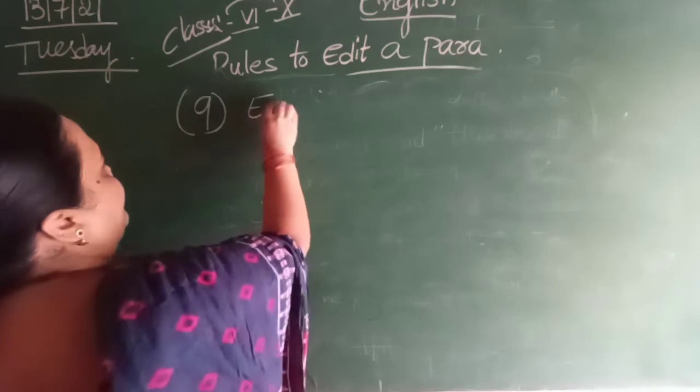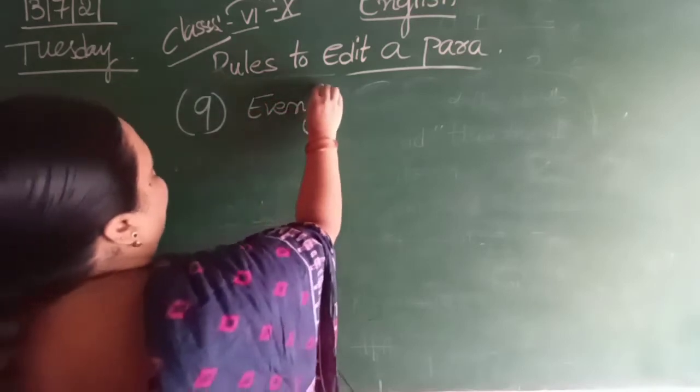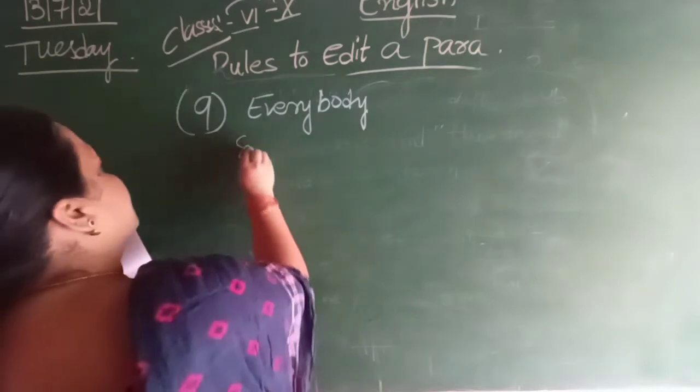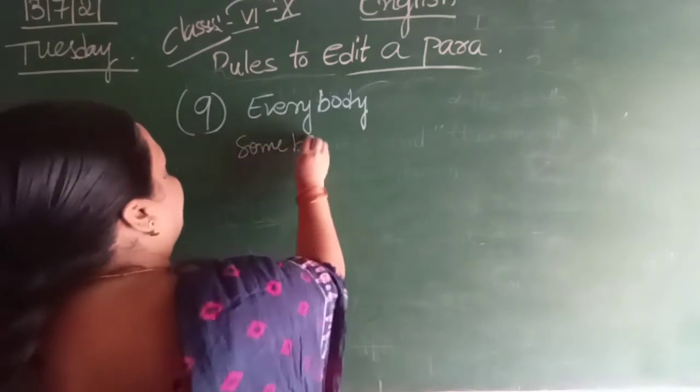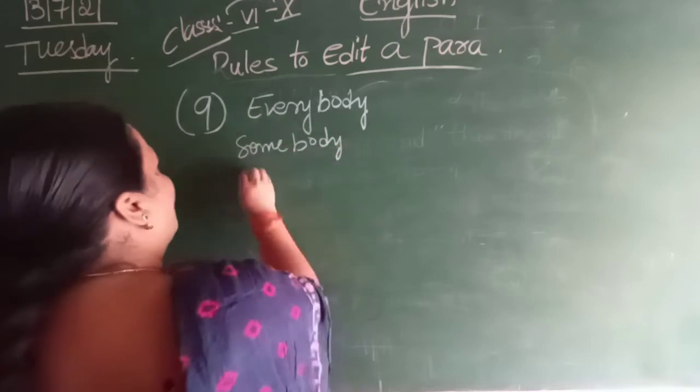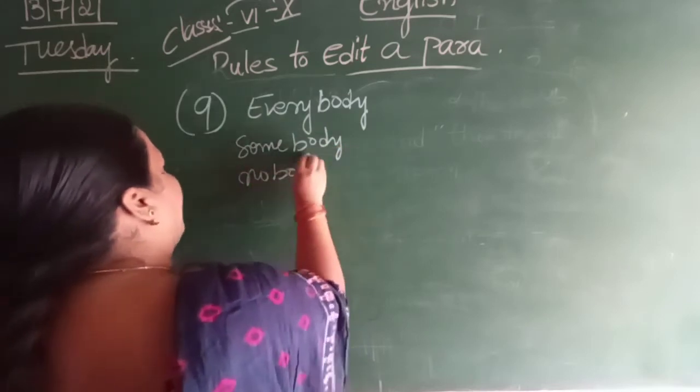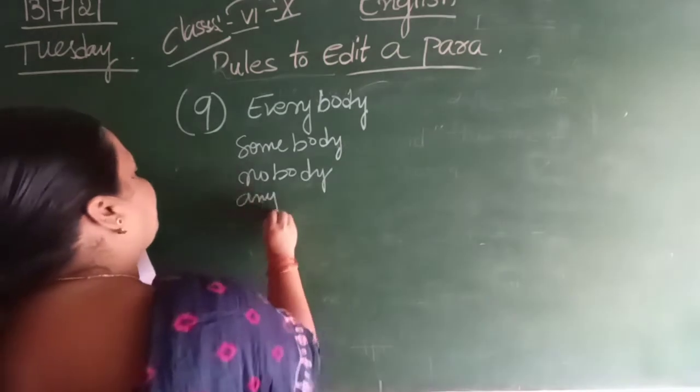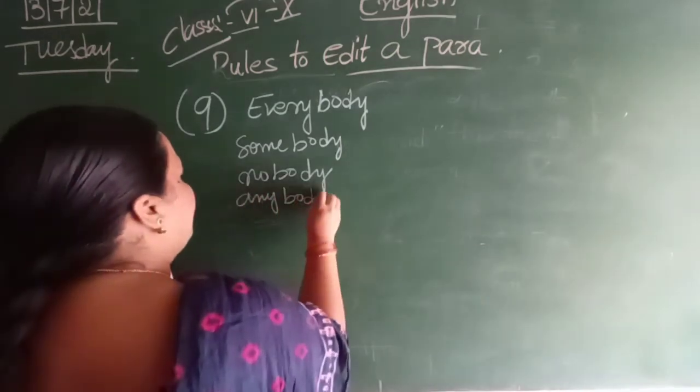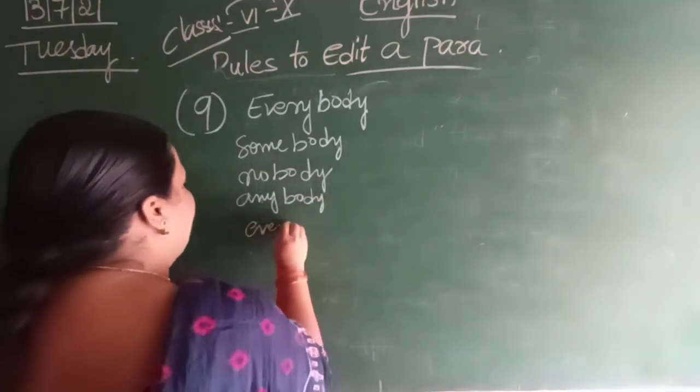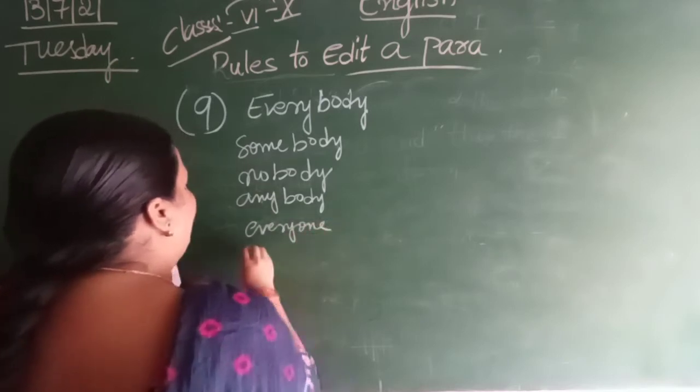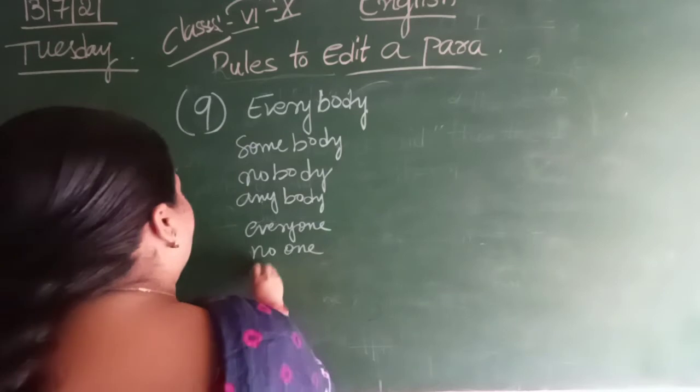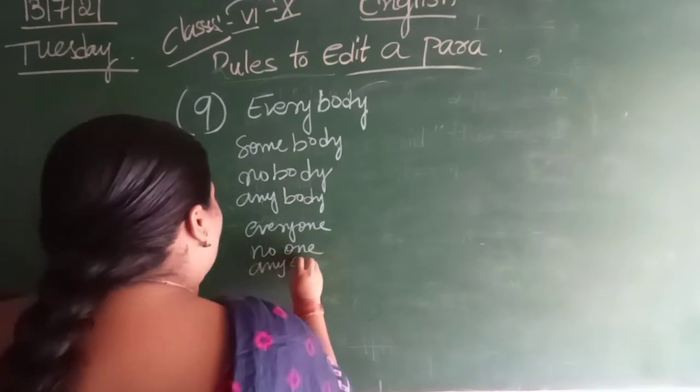Everybody. First, I will write words. Everybody. This is rule number 9. Everybody. Somebody. Nobody. Nobody. Okay. Anybody. Everybody. Everyone. Everyone. No one. Everyone. No one. Anyone. Anyone.